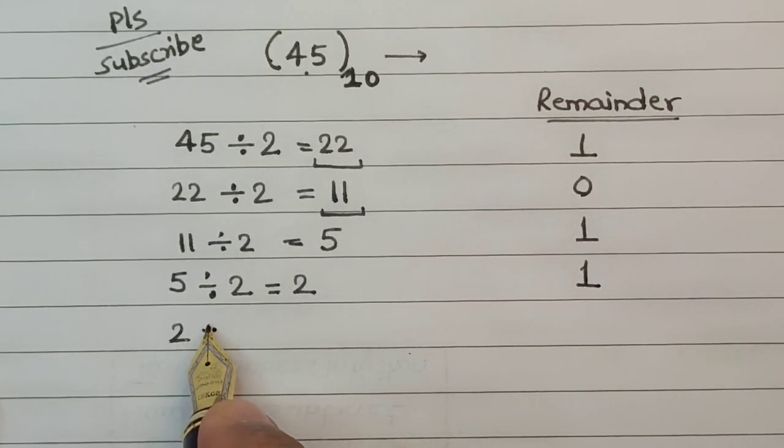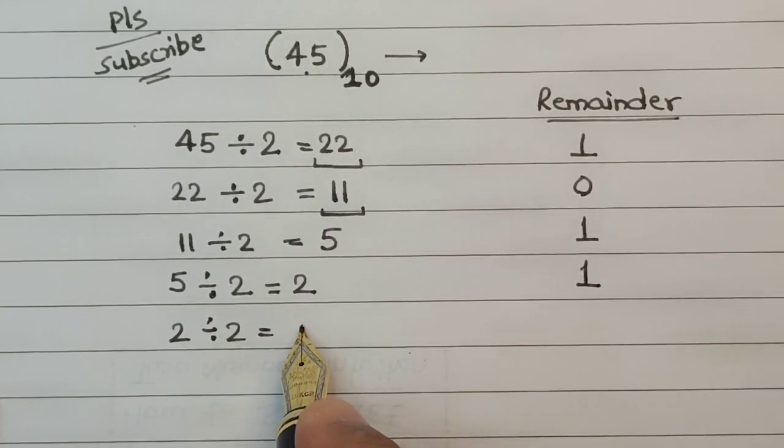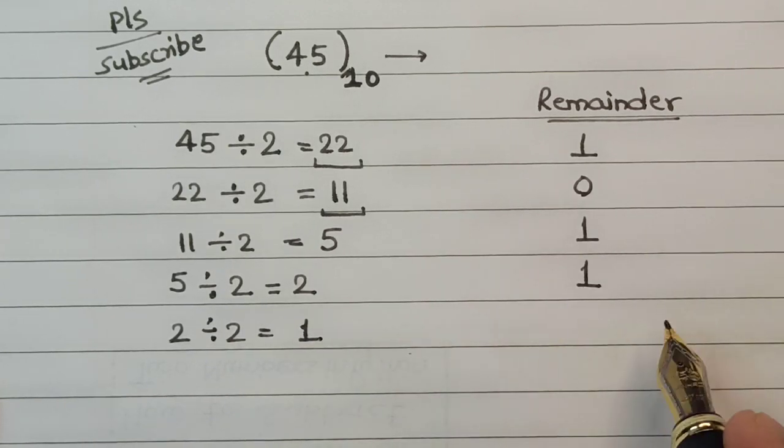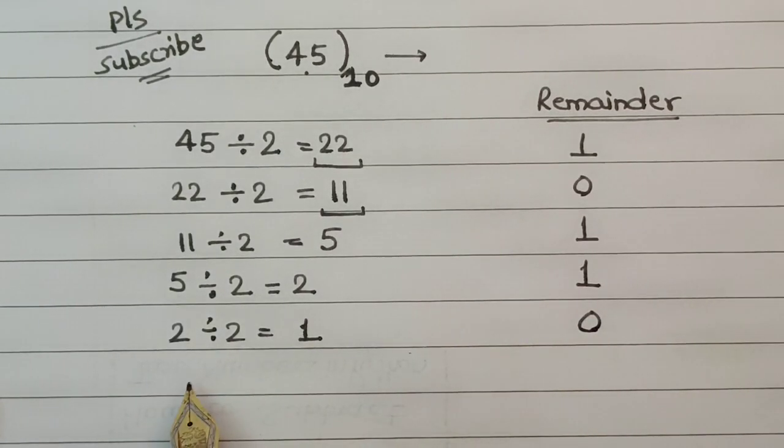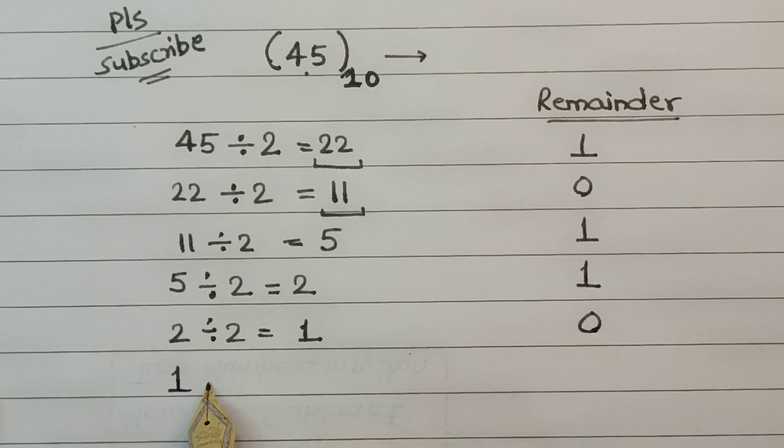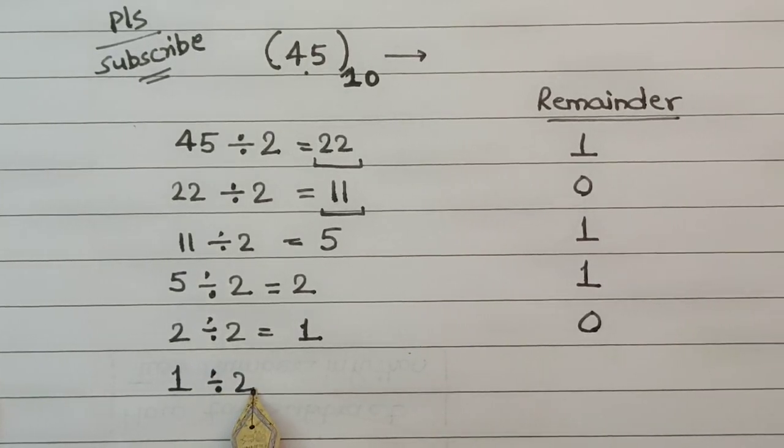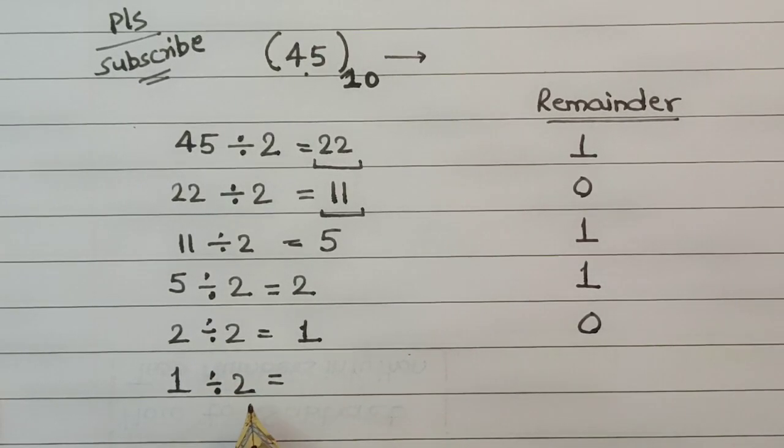In the next step we divide 2 again, so this time we get a quotient 1 with a remainder 0.